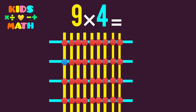We count: 1, 2, 3, 4, 5, 6, 7, 8, 9, 10, 11, 12, 13, 14, 15, 16, 17, 18, 19, 20, 21, 22, 23, 24, 25, 26, 27, 28, 29, 30, 31, 32, 33, 34, 35, and 36. So 9 times 4 equals 36.